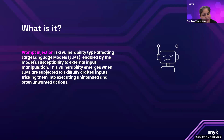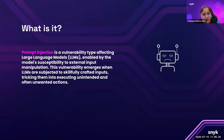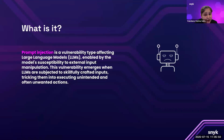Prompt injections can trick the model into ignoring its rules — like a bouncer who lets everyone into the club because someone said 'open sesame.' It also allows LLM models to share information they should not. It can help someone access stuff they're not supposed to get, steer business and safety decisions in the wrong direction, and it'll still happen even when developers use techniques like RAG or fine-tuning to make models smarter.